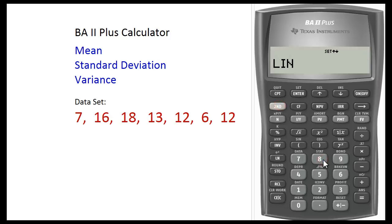By default, the BA2 Plus calculator displays the linear regression stats. Since we're only working with one variable, press 2nd, set. Then it displays LON.